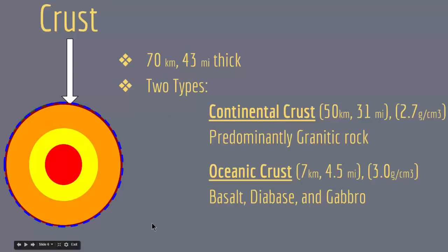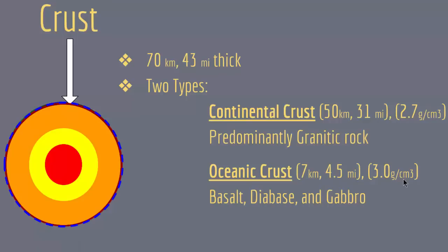Coming back to the crust: the continental crust is about 50 kilometers thick with a density of about 2.7 grams per centimeter cubed, and its rocks are mostly granitic. The oceanic crust is about 7 kilometers thick with a density of about 3.0 grams per centimeter cubed, and its rocks are mostly basalt, diabase, and gabbro.